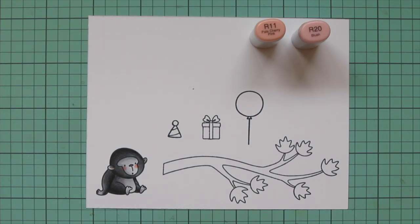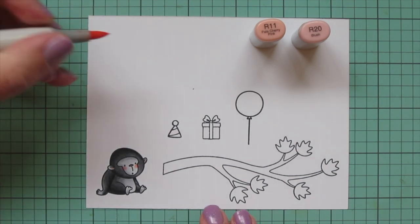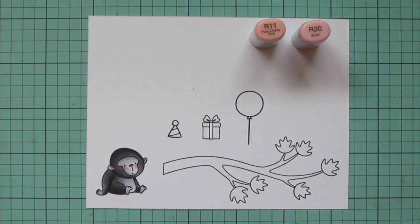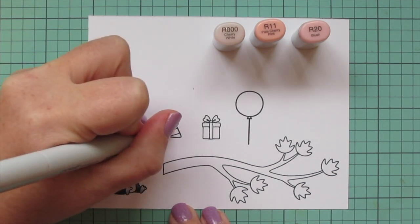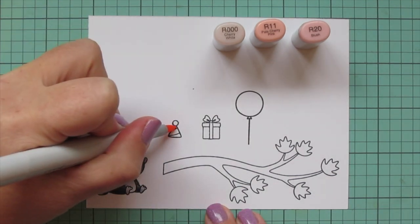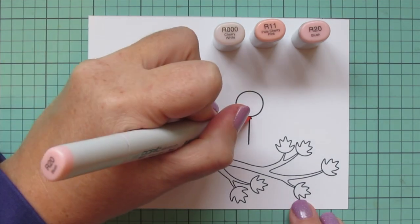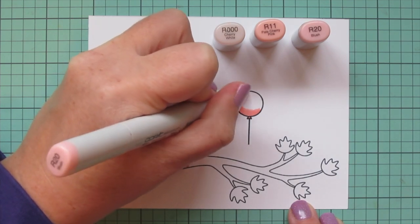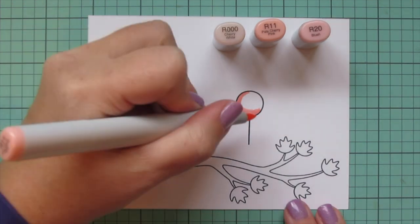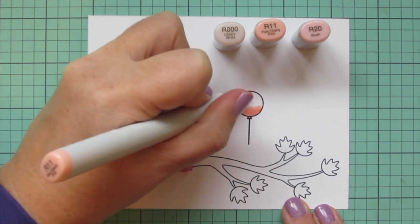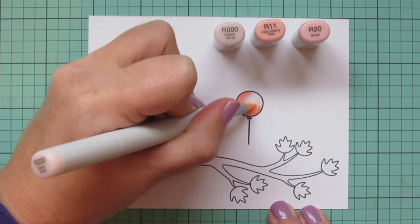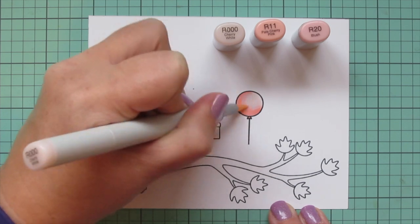And then I wanted to color some of the accessory images with these shades as well but I knew I was going to need a third shade so I'm going to pull in the R000 and then I'm going to color in the smallest stripe on the party hat. Because it's so small I ended up only using the darker two shades but I will use all three shades for the balloon starting with that R20 on the bottom and then up the left side and then blending that out with the R11 and then I'll use that R000 for the highlight.